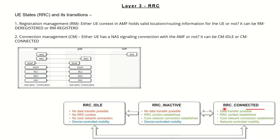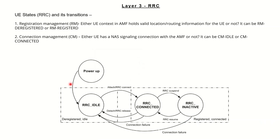In RRC connected mode, the network has full control over the user and data transmission begins between the UE and the AMF. When the user powers up, it goes to idle mode — RM deregistered and CM idle. Once it moves to connected or inactive mode, it converts to RM registered and CM connected mode. If there is no data to be transmitted, it shifts from RRC connected to inactive and then to idle mode.